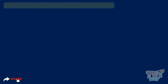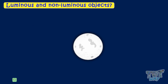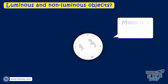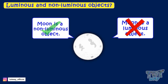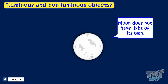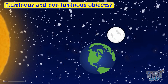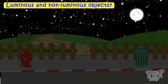Kids, the moon — is it luminous or non-luminous? Most of you will say the moon is a luminous object. But no, it's a non-luminous object. The moon does not have light of its own. It reflects the light of the sun falling on it, because of which it glows at night.